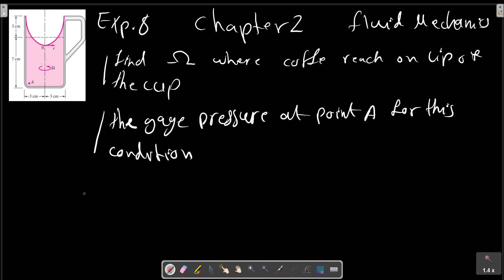From previous we have this relation for the Z equals to P0 minus P divided by gamma, P is the arbitrary point to calculation, plus R squared Omega squared on 2G.